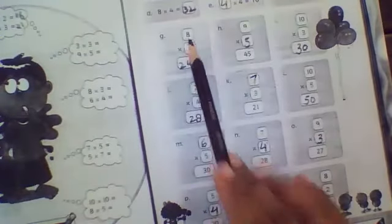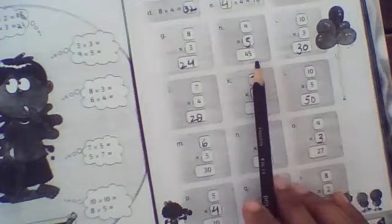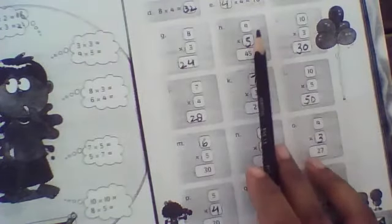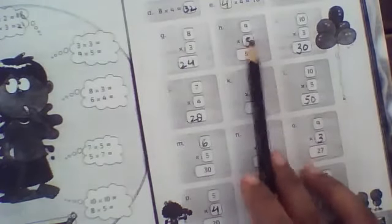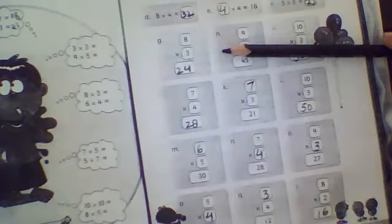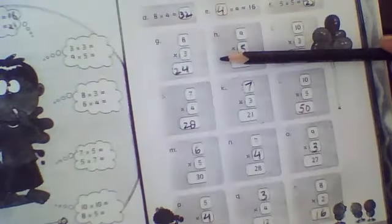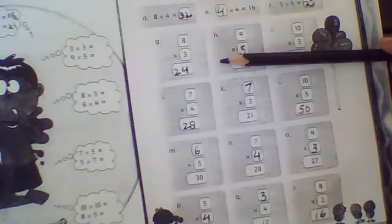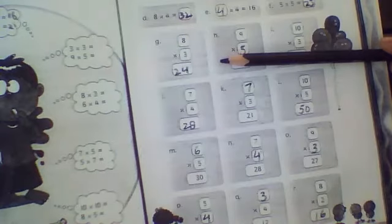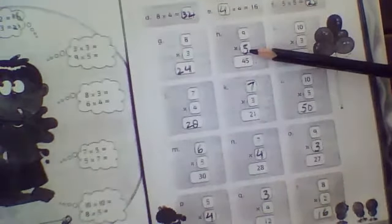3 eights are 24. 5 nines are? Where will we get to the table of 9? Where will the answer come from 45? 9 ones are 9, 9 twos are 18, 9 threes are 27, 9 fours are 36, 9 fives are 45. Where did we get to the table of 5? Yes, 5 fives.